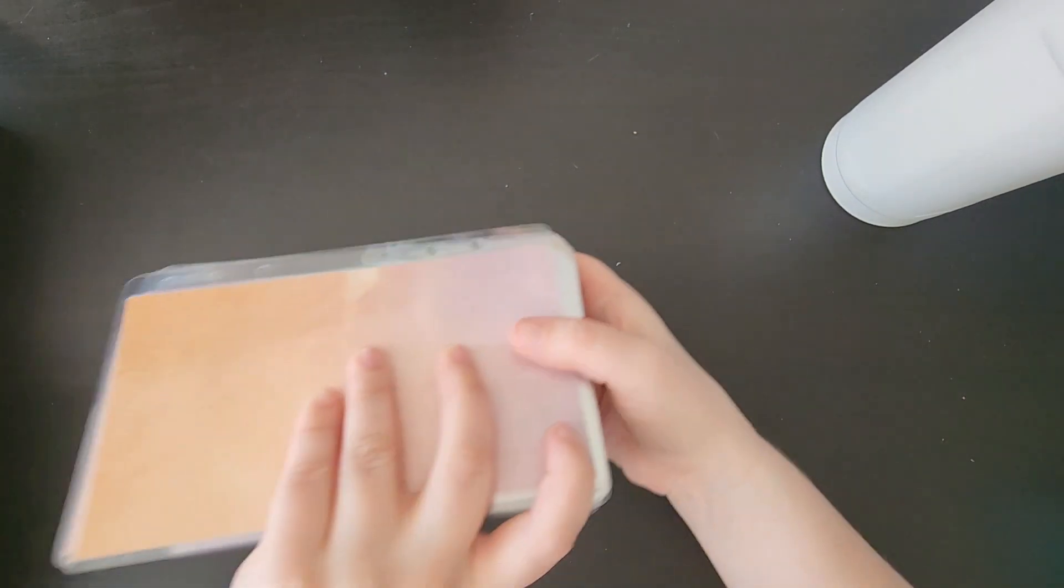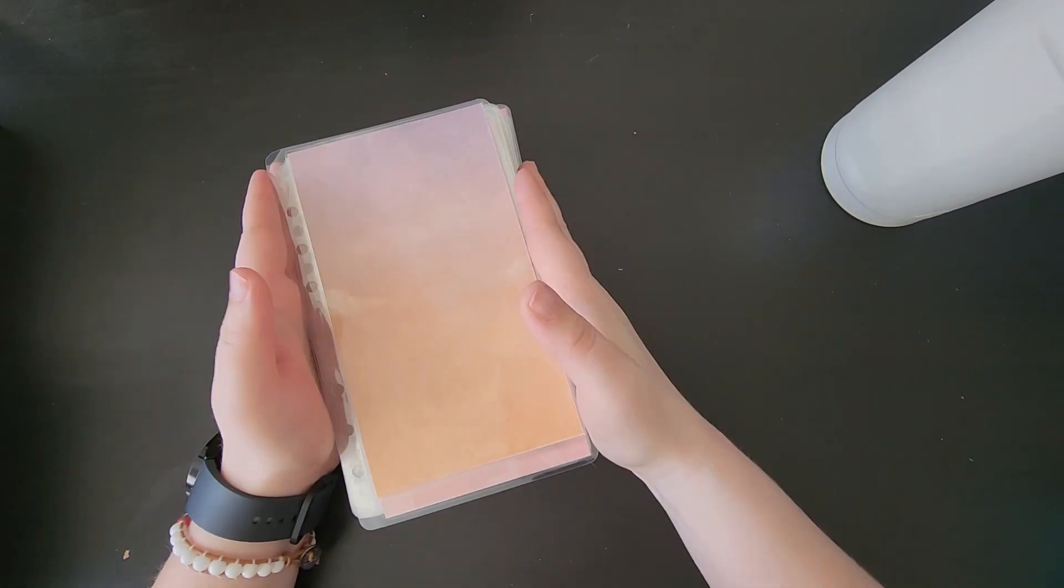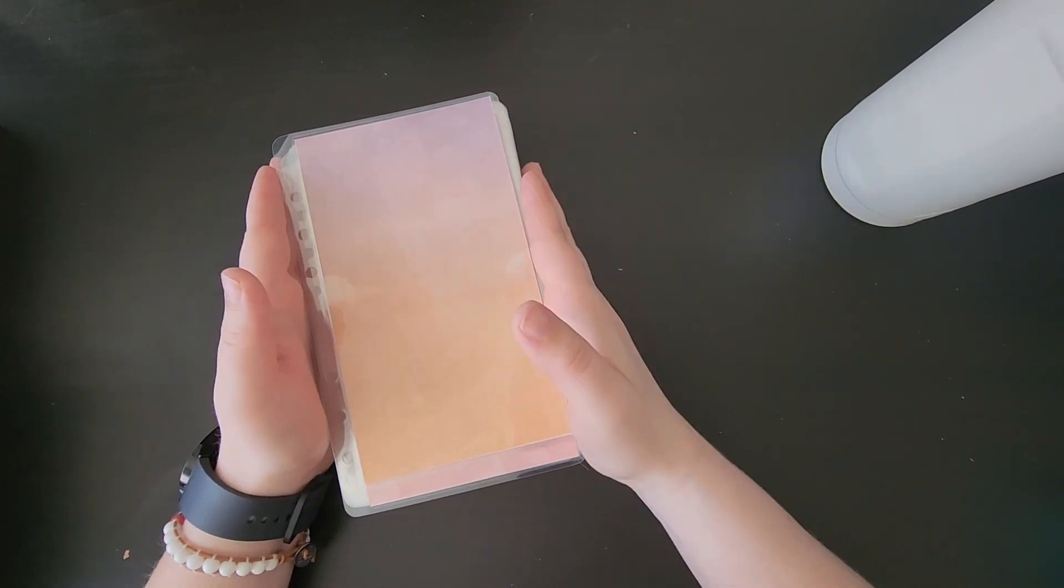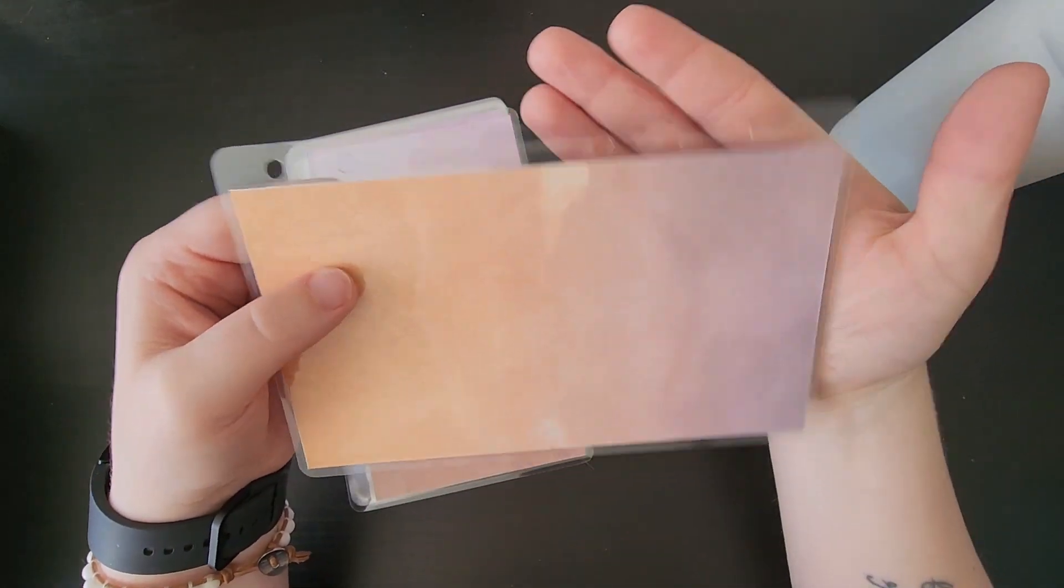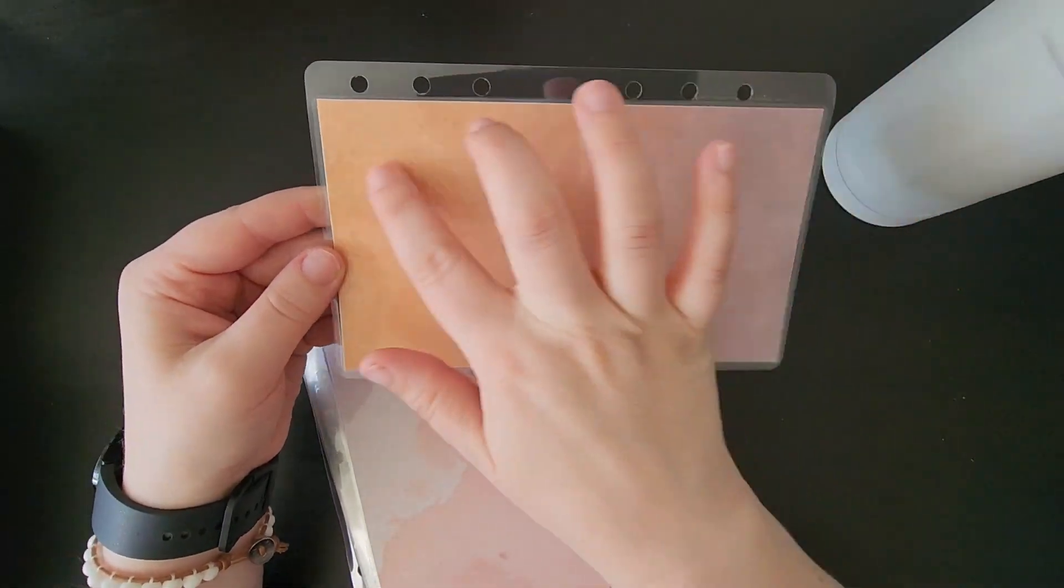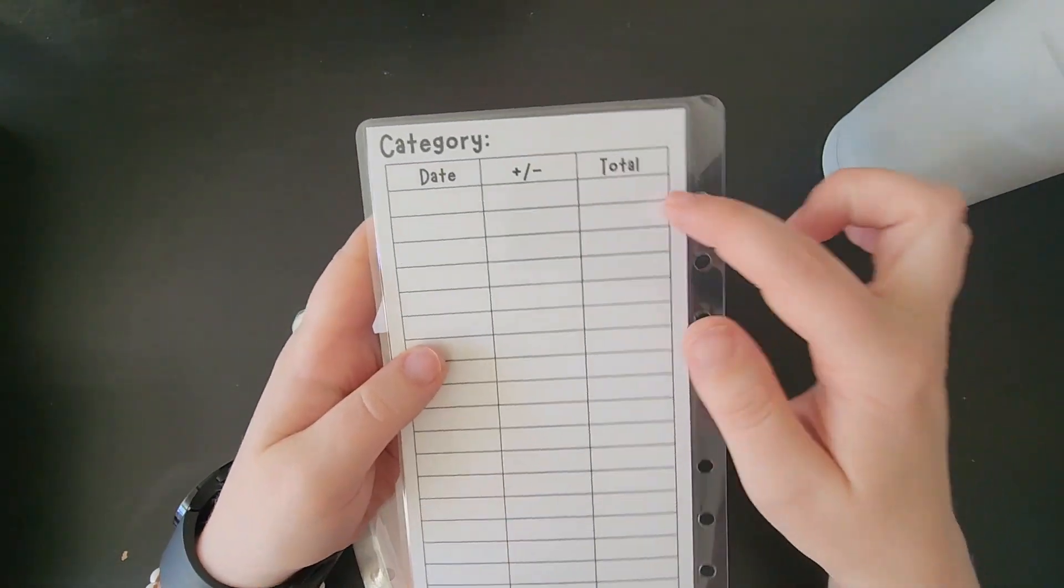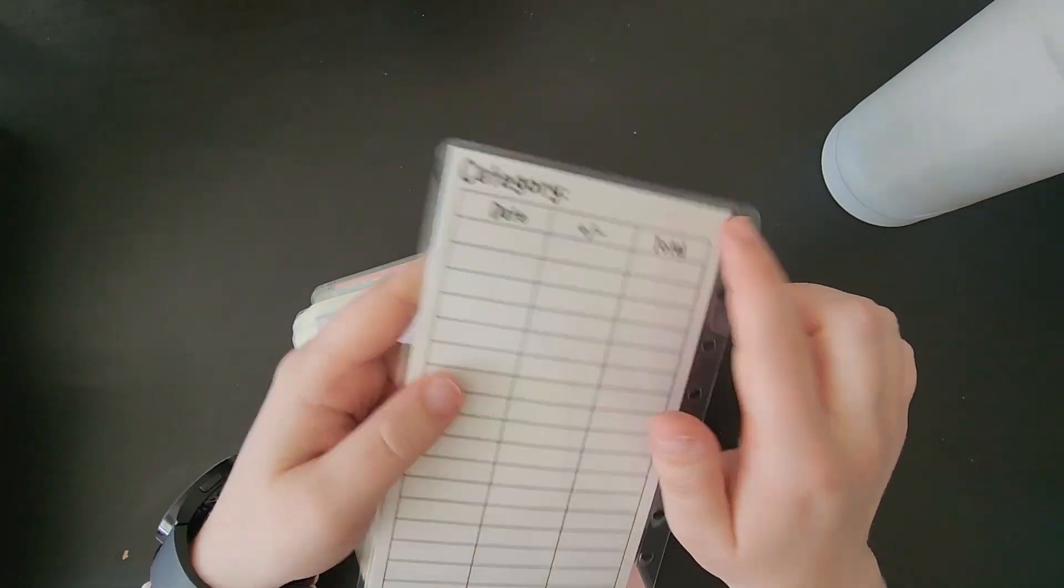So we'll start with the new trackers that are going to be coming out. We'll start with these ones. And these are going to be the watercolor collection, so they're going to be six trackers for $16. They are A6 hole punched, corners rounded, laminated, so you can use them with a sharpie and wipe it off. There is 18 spaces for you to fill in information, as well as a spot for the category.